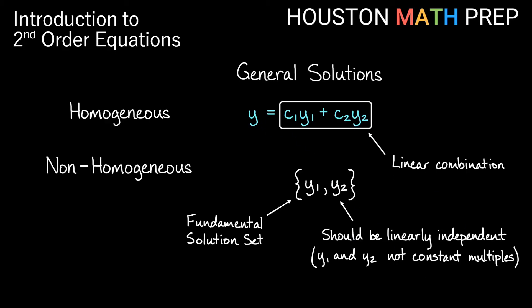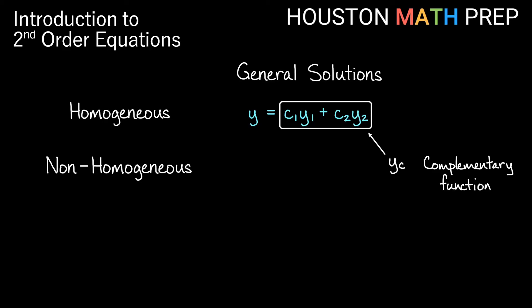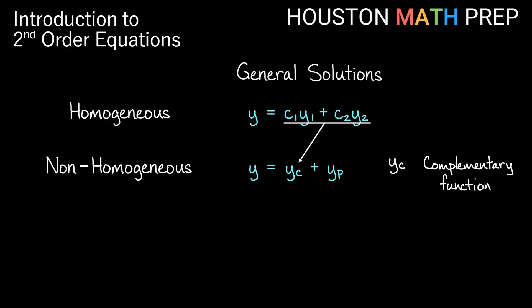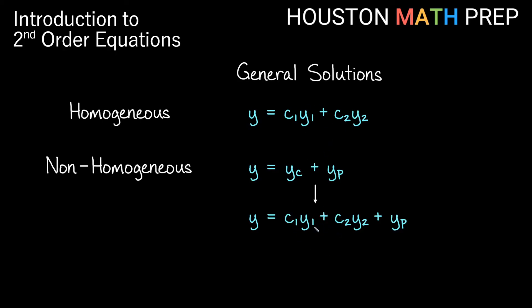The solution to a linear homogeneous second order equation is also called the complementary function, or y sub c. When solving a non-homogeneous linear second order equation, that complementary function is part of the solution, but we also have an additional function called the particular function, y sub p. This is different from a particular solution — it's just another function of x that we attach to the complementary function to satisfy the non-homogeneous equation. So to solve a non-homogeneous equation, part of the process is first solving the homogeneous version. The particular function must also be linearly independent with the complementary solution set.